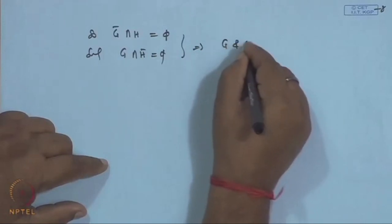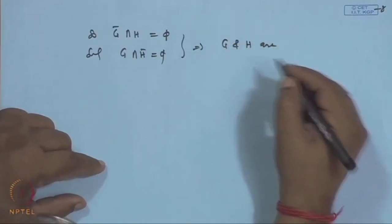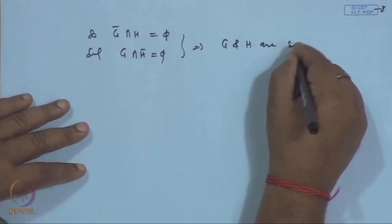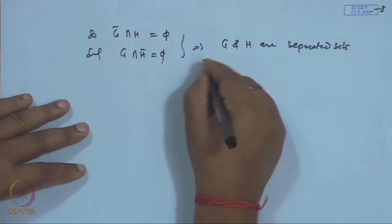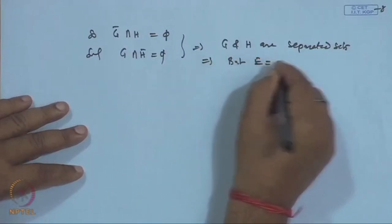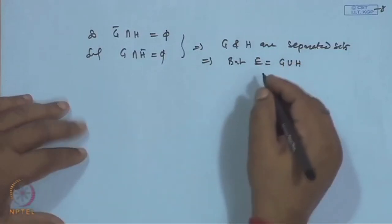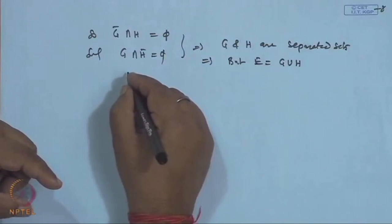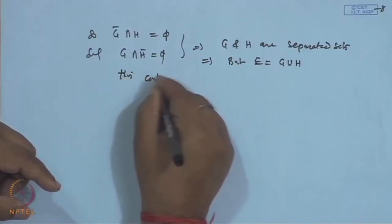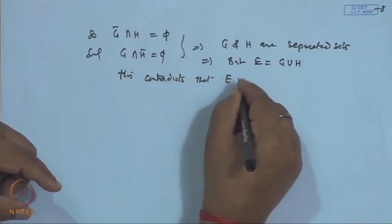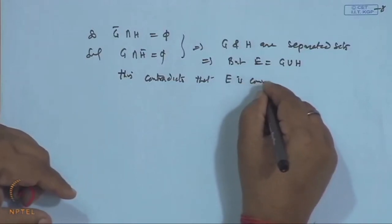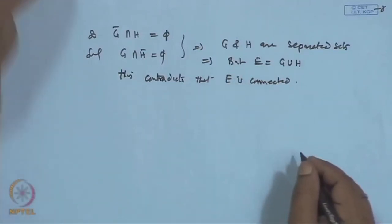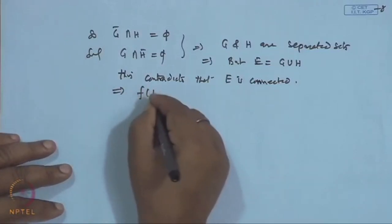This contradiction arose from our assumption that f(E) is not connected. Therefore f(E) is connected. This proves the relation between continuity and connectedness: the continuous image of a connected set is connected.